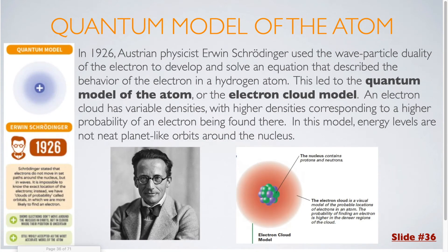In 1926, Austrian physicist Erwin Schrödinger used the wave-particle duality of the electron to develop and solve an equation that described the behavior of the electron in a hydrogen atom. This led to the quantum model of the atom, or the electron cloud model.